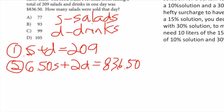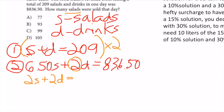Save time by looking at what they're asking: how many salads. I want to get rid of D. I'll use elimination. I multiply the first equation by 2, giving 2S + 2D = 418.